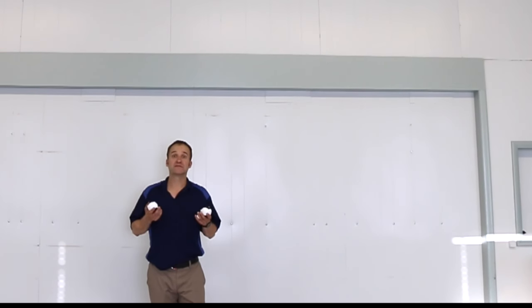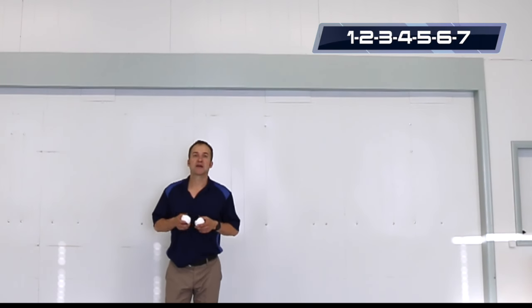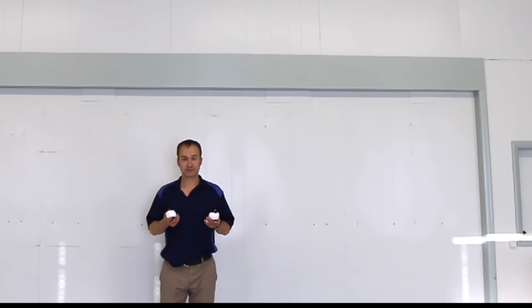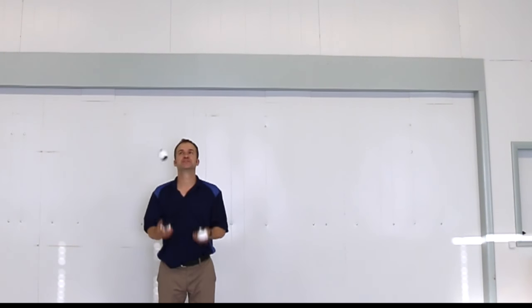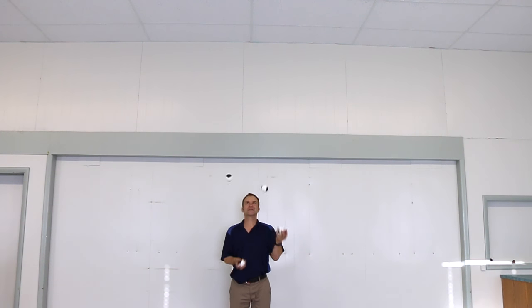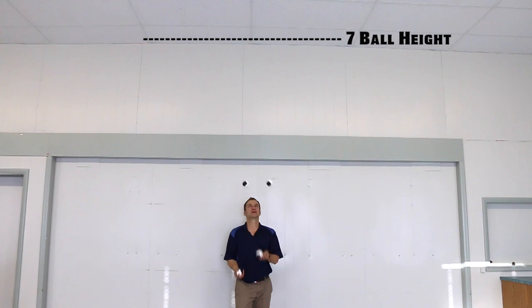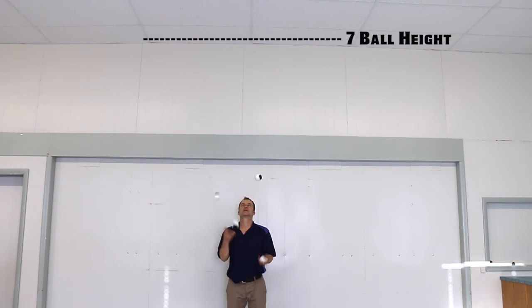If you can do the 2-3-4-5-6, now you can add the one and the seven as well. So here's what it looks like. Start with a five then throw the six and a seven right after that and the one comes naturally. 5-6-7-1. 5-6-7-1.